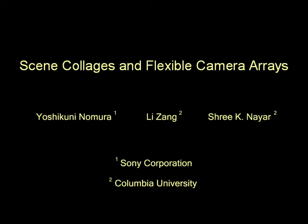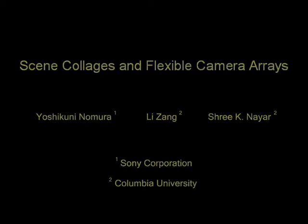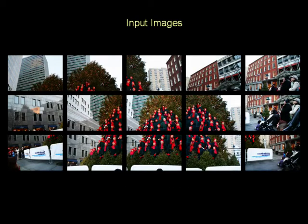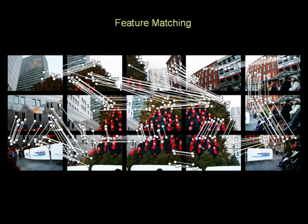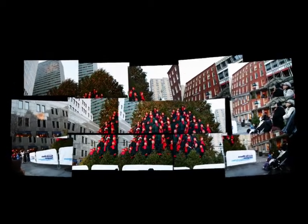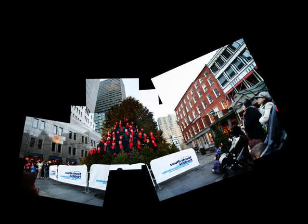In this work, we have developed an automatic method for creating a scene collage from a collection of photos. Here is a set of images of a scene taken from various viewpoints. First, SIFT features are used to find matching points between all pairs of images. Then, a FAST algorithm uses the matched features to compute a Hockney-style collage. This collage is a piecewise perspective representation of the scene.